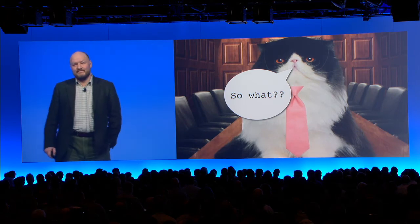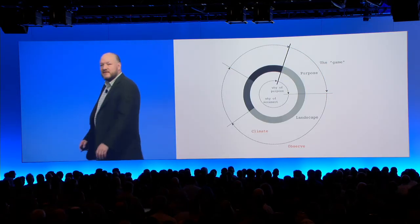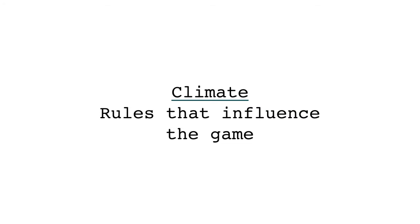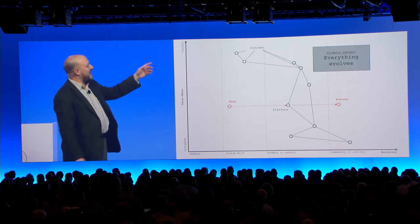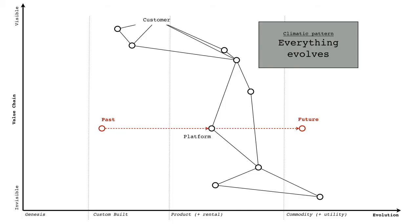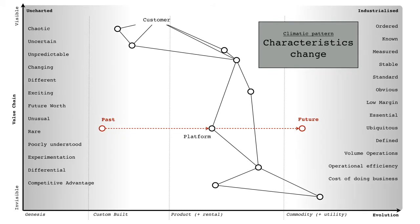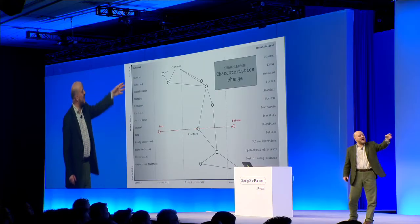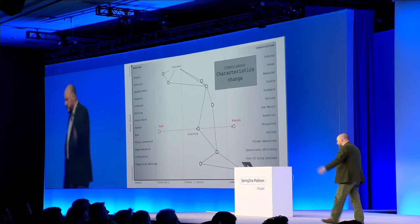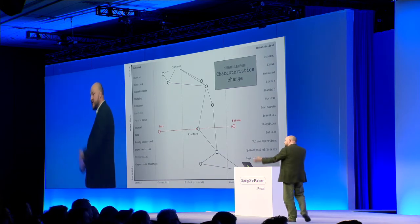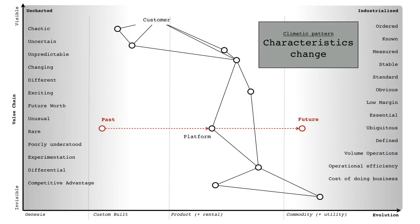Once you have a map, you can start to observe climatic patterns — these are the rules that influence the game. There are 31 of them. Things like: everything evolves. If you have supply and demand competition, it moves from left to right. The second one is characteristics change. Everything starts off in this uncharted space where it's chaotic, uncertain, unpredictable — here be dragons. Over time, it becomes industrialized, ordered, standard, stable, dull, boring. As things evolve, they also enable higher-order systems to appear. Electricity enables television, radio, lighting — and all of that stuff evolves as well.